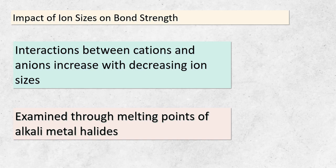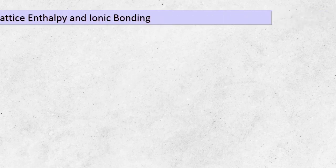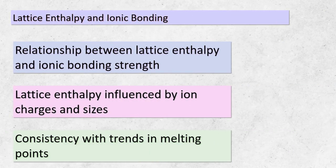Let's explore how the sizes of ions come into play when determining the strength of ionic bonds. As ions become smaller, their interactions with each other grow stronger. This phenomenon is beautifully evident when we examine the melting points of alkali metal halides — if the ions are smaller, the forces of attraction between them intensify, leading to higher melting points. This relationship mirrors the trends we've discussed previously about lattice enthalpy. Lattice enthalpy is also influenced by ion charges and sizes, and these trends align beautifully with what we've learned about melting points and bond strengths.